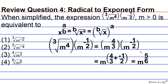This is our simplified result, but since all answer choices are in radical form, we convert m to the 5/6 back. The numerator 5 becomes the exponent of the radicand, and the denominator 6 becomes the index of the root. So our final answer is the 6th root of m raised to the 5 — answer choice 4.